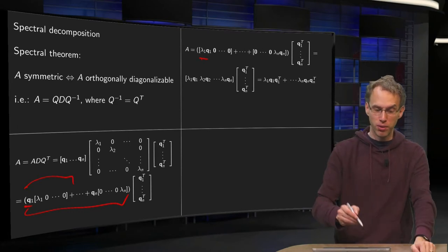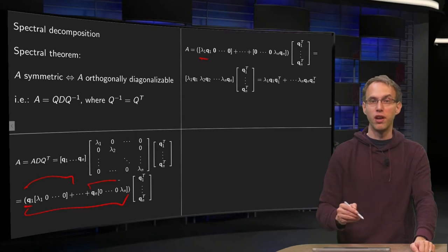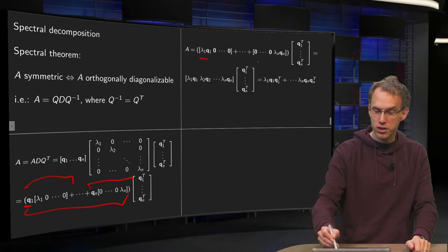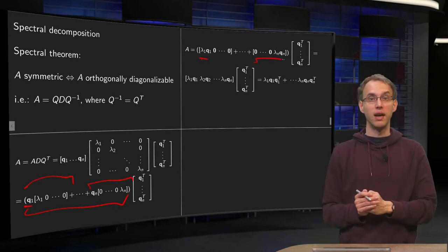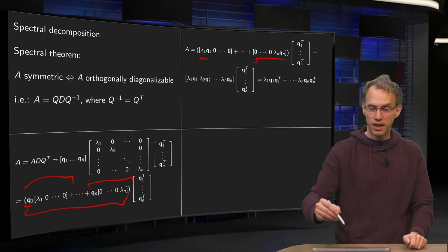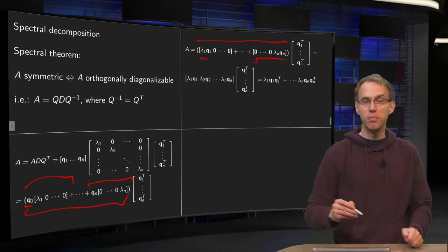We do the same trick for all the other ones. For example the last one will yield the matrix with all zero columns. And now in the last column you will get lambda n times Qn. Now we can add all those matrices up easily.